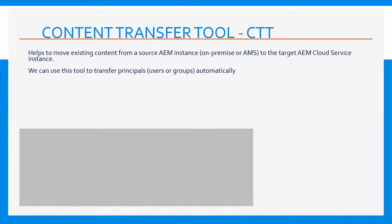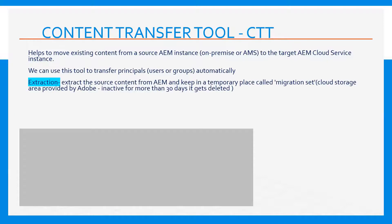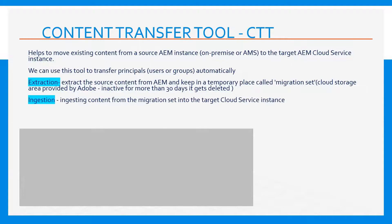We can use this tool to transfer principals — basically the users and groups — automatically. There are two steps involved in this. The first one is extraction, where we need to extract the source content from AEM and keep it in a temporary place called migration set. The migration set is a cloud storage area provided by Adobe. The second step is ingestion, where we will be ingesting the content from the migration set into the target cloud service instance.